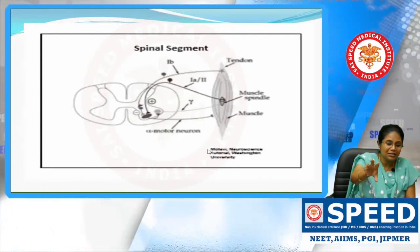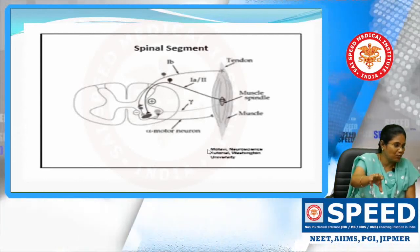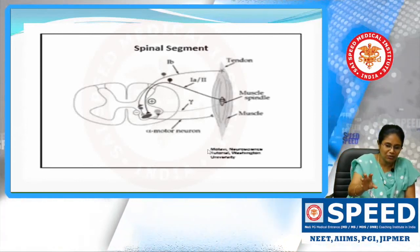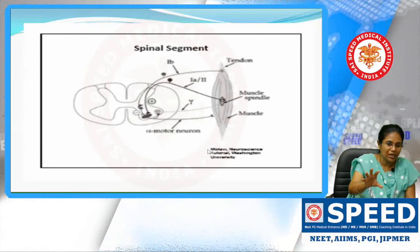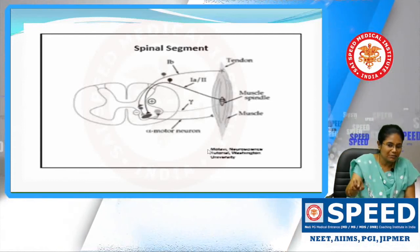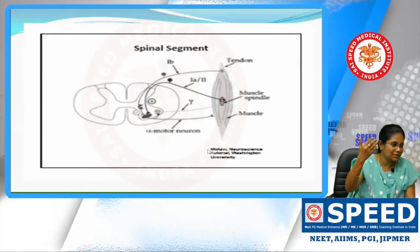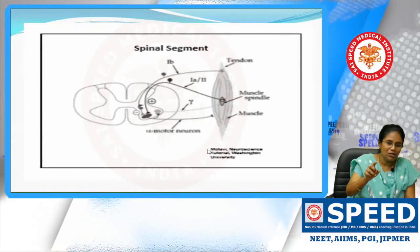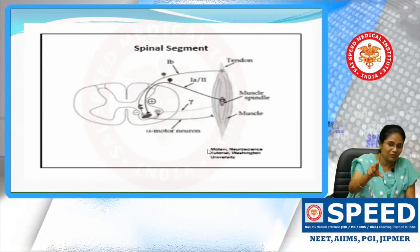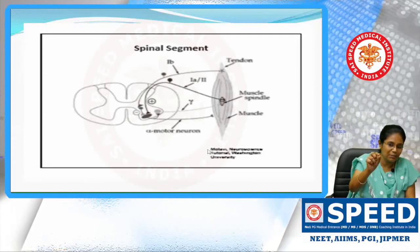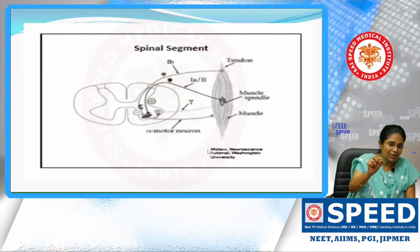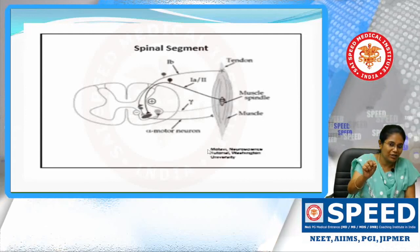This is the intrasegmental output. For any motor system to be carried out, it involves the anterior horn cell with intrasegmental input connections and suprasegmental control. The intrasegmental control involves the muscle spindle, the 1A afferent, the 1B afferents, and the alpha motor neuron.